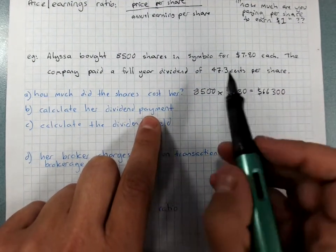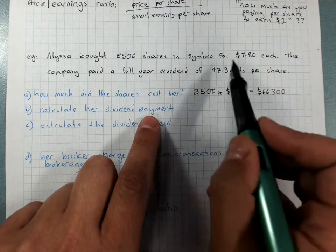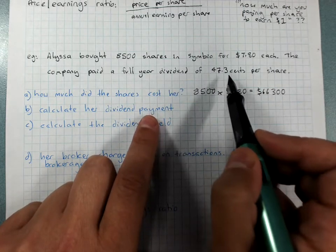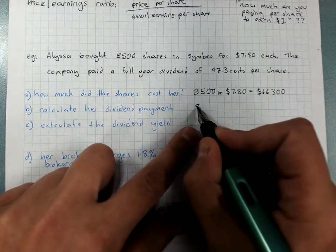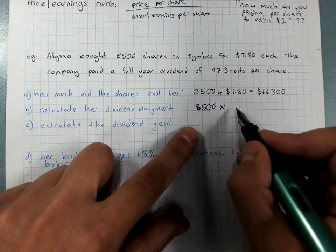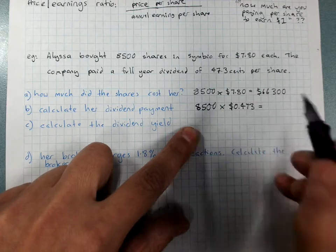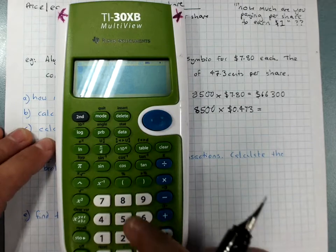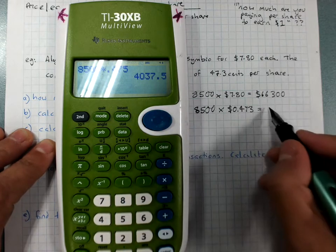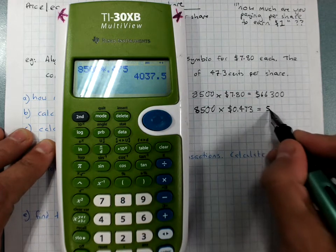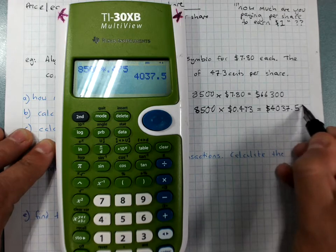Calculate her dividend payment. She got 47.3 cents per share and she got 8,500 shares. Now remember this dividend is in cents. You're going to have to change it to dollars either before or after you've done the multiplication. So 8,500 shares times, let's change this to dollars by dividing by 100. So she's earned $4,037.50 from the shared profits of that company this year. And she still owns those shares. So maybe next year she'll make a profit as well.